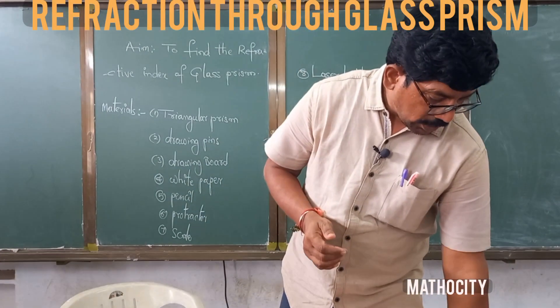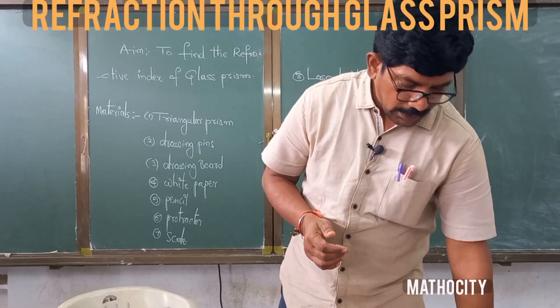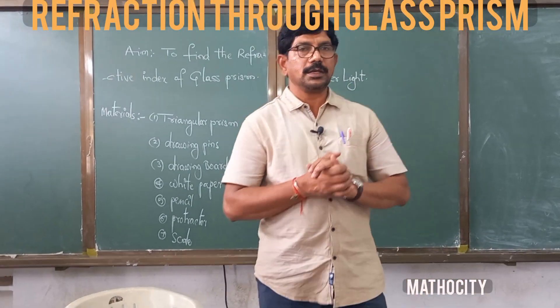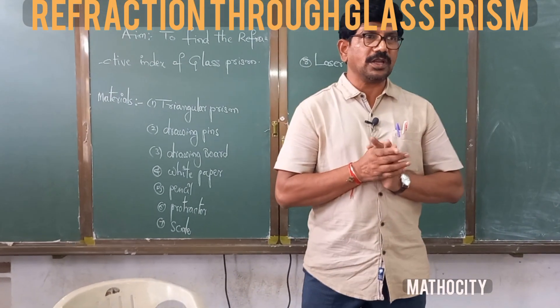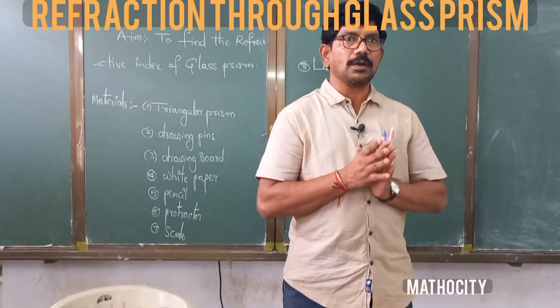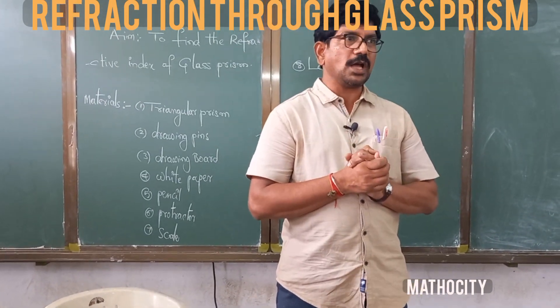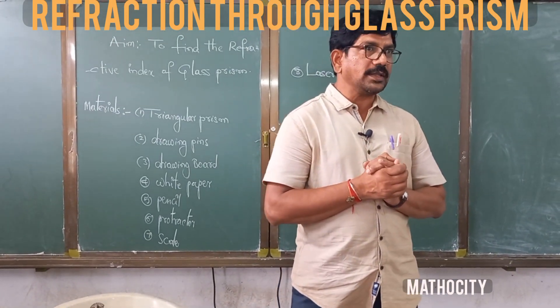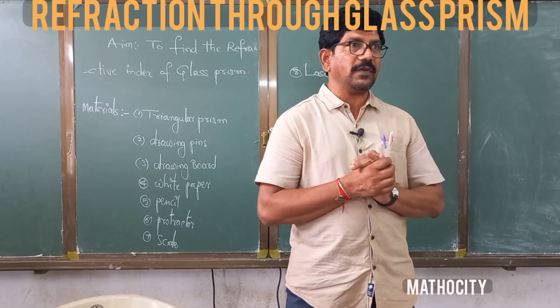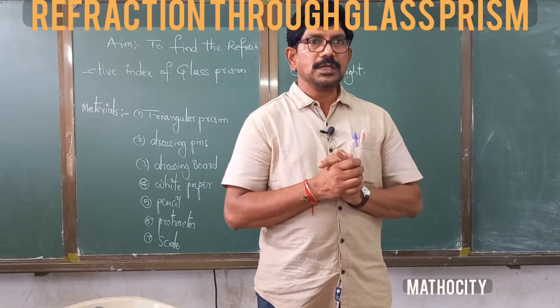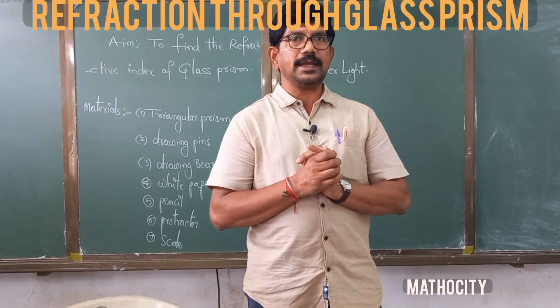Good evening children. Today we are going to learn refraction of light through a glass prism, and we are also going to find the refractive index of the glass prism. The materials needed to do this activity are as follows.